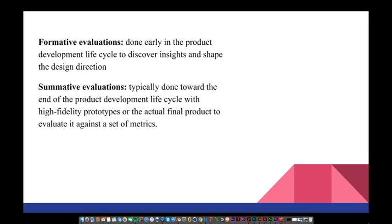The chapter breaks it into two different types of evaluations. One being formative evaluations, which are done very early in the product development lifecycle to discover insights and shape the design direction. Additionally, this type of evaluation typically involves usability methods or usability testing with low-fidelity prototypes. The second method, summative evaluations, is similar to what it sounds like. Basically, these are typically done toward the end of the product development lifecycle with a high-fidelity prototype.